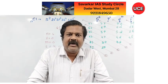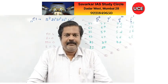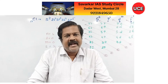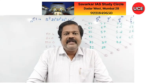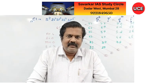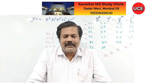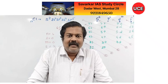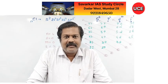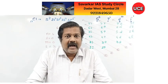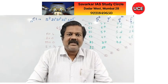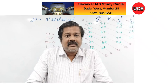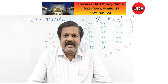This is how we find all 4 quantum numbers for any electron. Now, one more important principle: Pauli's Exclusion Principle. In a single atom, no two electrons can have all four quantum numbers the same.